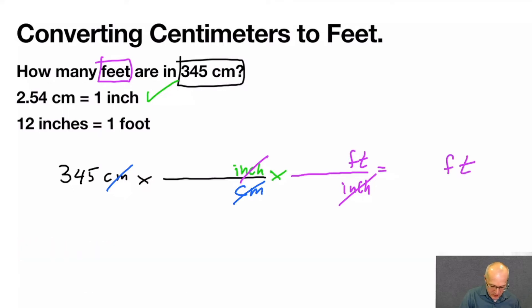We know from our equalities that there are 2.54 centimeters in one inch. We also know that there are 12 inches in one foot that comes from here.